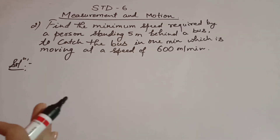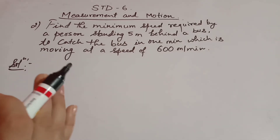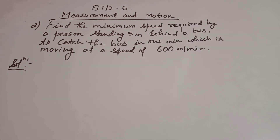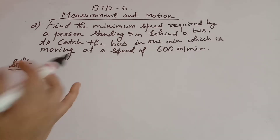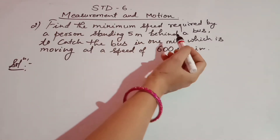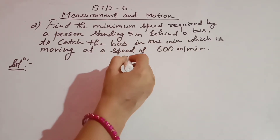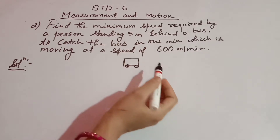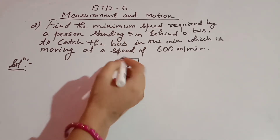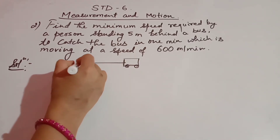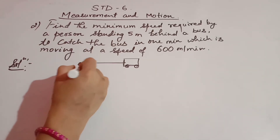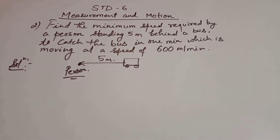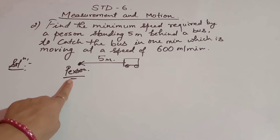The next question is: find the minimum speed required by a person standing 5 meters behind a bus to catch the bus in one minute, where the bus is moving at a speed of 600 meters per minute. This is a very simple question. Understand it clearly — a person wants to catch a bus. Suppose this is the bus, and the person is standing 5 meters behind. This distance is 5 meters.